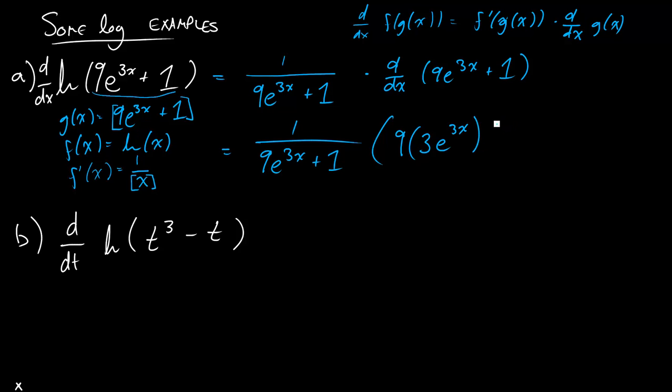And then the derivative of the 1 is going to be 0, right? So in the end, this 9 times 3 is going to turn into a 27, and I'll get 27e to the 3x divided by 9e to the 3x plus 1. Everything's getting a little bit close together, but hopefully it's clear enough.